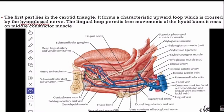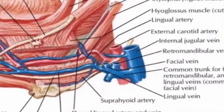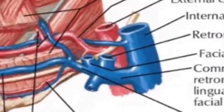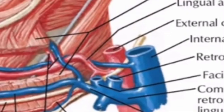So the first part has four relations: first, it lies in the carotid triangle; second, it is crossed by the hypoglossal nerve; third, it lies on the middle constrictor muscle; and fourth, there is an upward loop for movement of the hyoid bone.